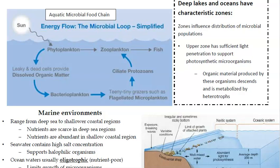This is an example of a food chain in the ocean made up of microorganisms. Phytoplankton are the producers creating energy for the rest of the chain. Then you have heterotrophs like bacterial plankton, flagellated microplankton, ciliate protozoans, and zooplankton.